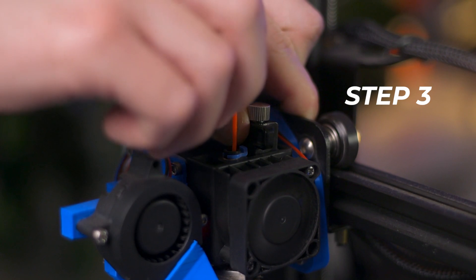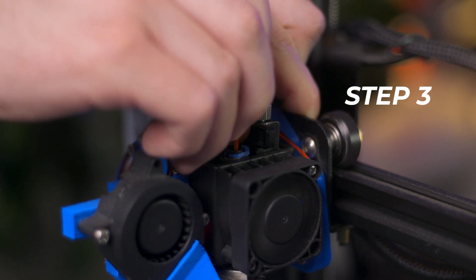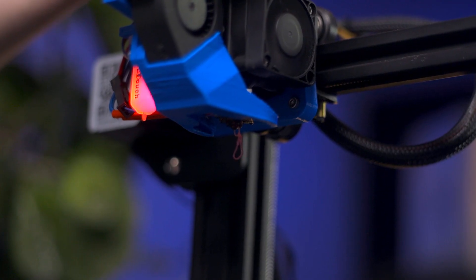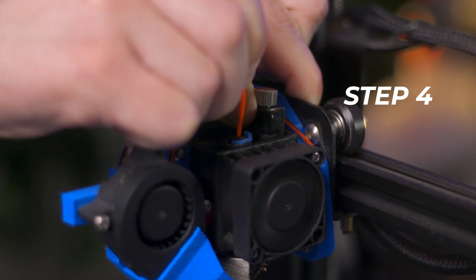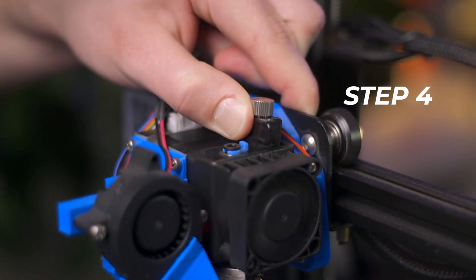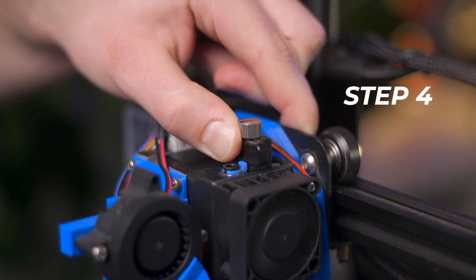Step 3: With tension relieved, push the filament gently into the extruder until you see a small amount extrude out of the nozzle. Step 4: Quickly pull the filament out of the extruder. This should be done in a smooth motion, not a yanking one, to prevent the filament from snapping.